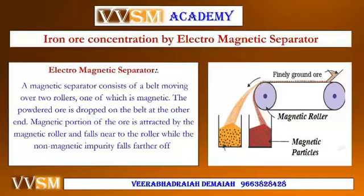Iron ore concentration by electromagnetic separator: the electromagnetic separator consists of a magnetic separator belt moving over two rollers, one of which is magnetic. The powdered ore is dropped on the belt at one end. The magnetic portion of the ore is attracted by the magnetic roller and falls near to the roller, while the non-magnetic impurity falls further off. This is the separation of magnetic materials from the powdered ore — a method of concentration of the ore.